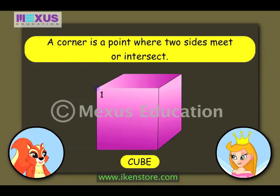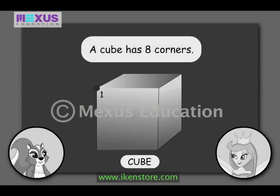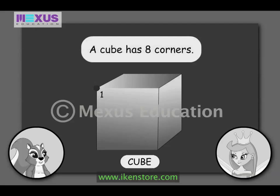A corner is a point where two sides meet or intersect. A cube has eight such corners.